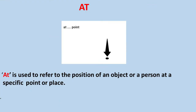The preposition 'at' is used to refer to the position of an object or a person at a specific point or place. The preposition 'at' tells us the location and the direction.